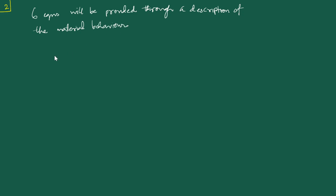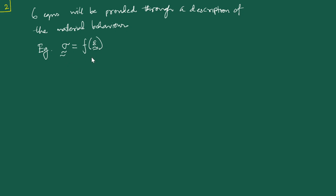Without going into any specific kind of material behavior, let's say the six equations will be provided through our description of material behavior. For example, from our very familiar instance of Hooke's law, where for the uniaxial case sigma equals E times epsilon — the material behavior relation is a more generic version of that. Although we have now introduced six equations, apparently mitigating the six-equation discrepancy, that is not really true.